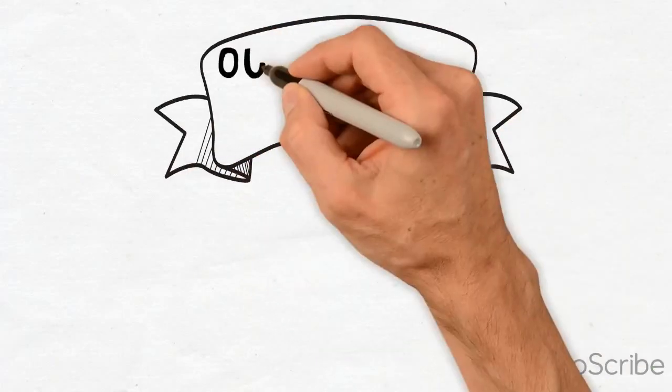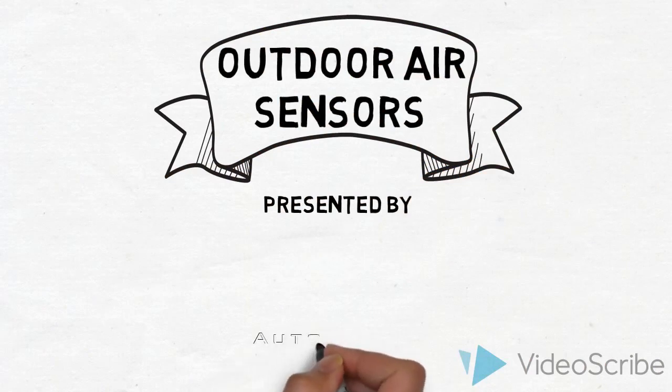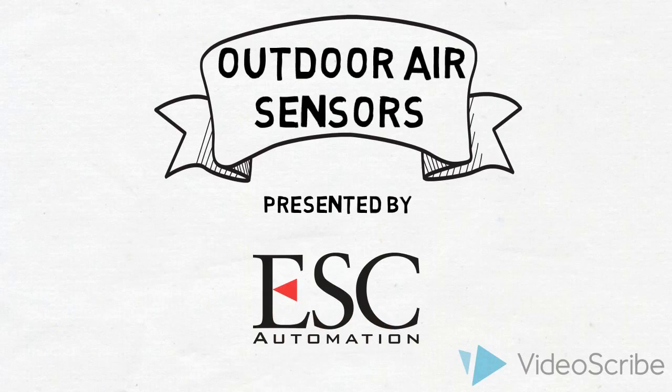Here we are from ESC Automation. I want to go over an outdoor air sensor. An outdoor sensor is probably one of the most important sensors in a building automation system. It's very important that we get a good accurate reading of outdoor temperatures.